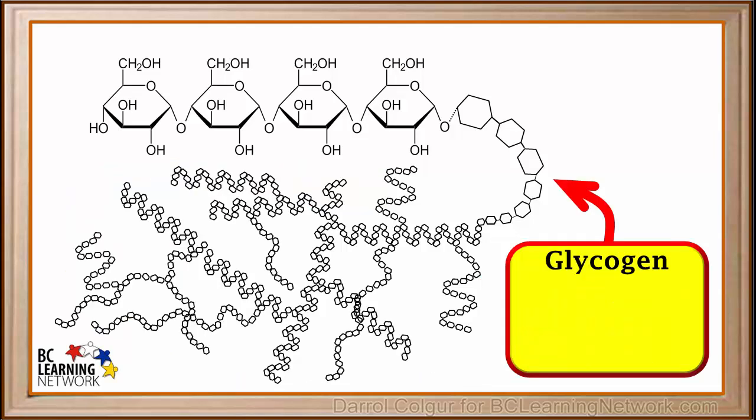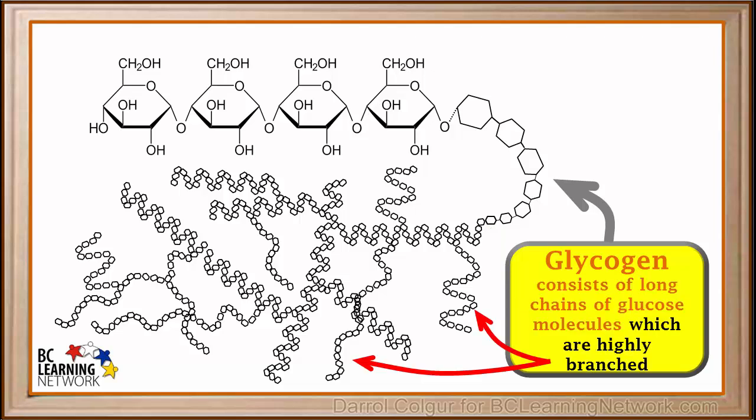Glycogen is another polysaccharide. You can see it has a lot more branches than starch. It is produced in animals rather than plants. When blood levels of glucose are high, the liver produces glycogen, which is a way of storing glucose for when it is needed. Glycogen is stored in the liver and in the muscle cells. Like starch, glycogen also consists of long chains of glucose units, but in glycogen, the chains are much more highly branched than in starch.